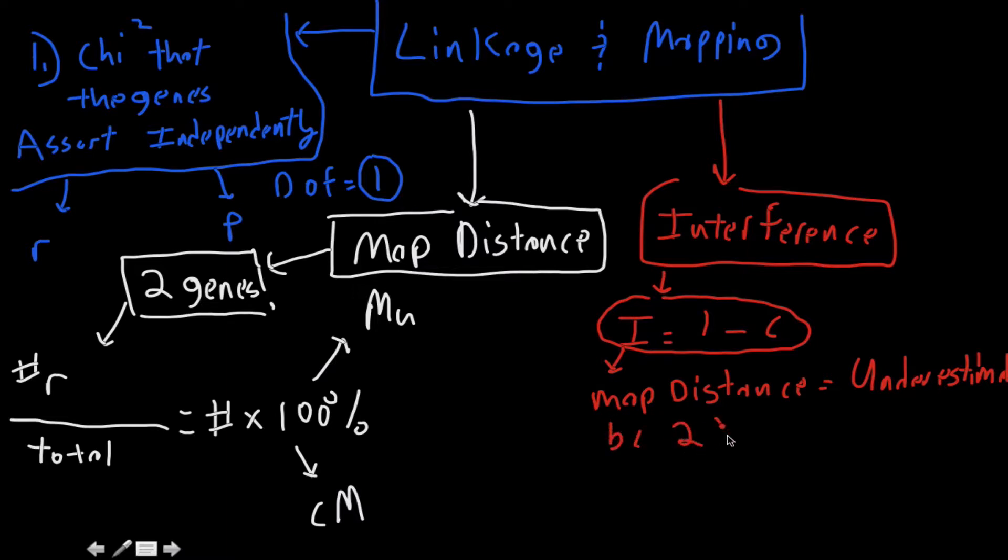So I'm going to say with this equation, how much double crossovers are interfering with our predictions. So there's two answers that we can get. We can get positive interference, and we can get negative interference. And so it's kind of like the inverse of what you're probably thinking whenever you see these sets. So if we have negative interference, that means that a crossover in one region, crossover in region A, actually increases crossover in region B.